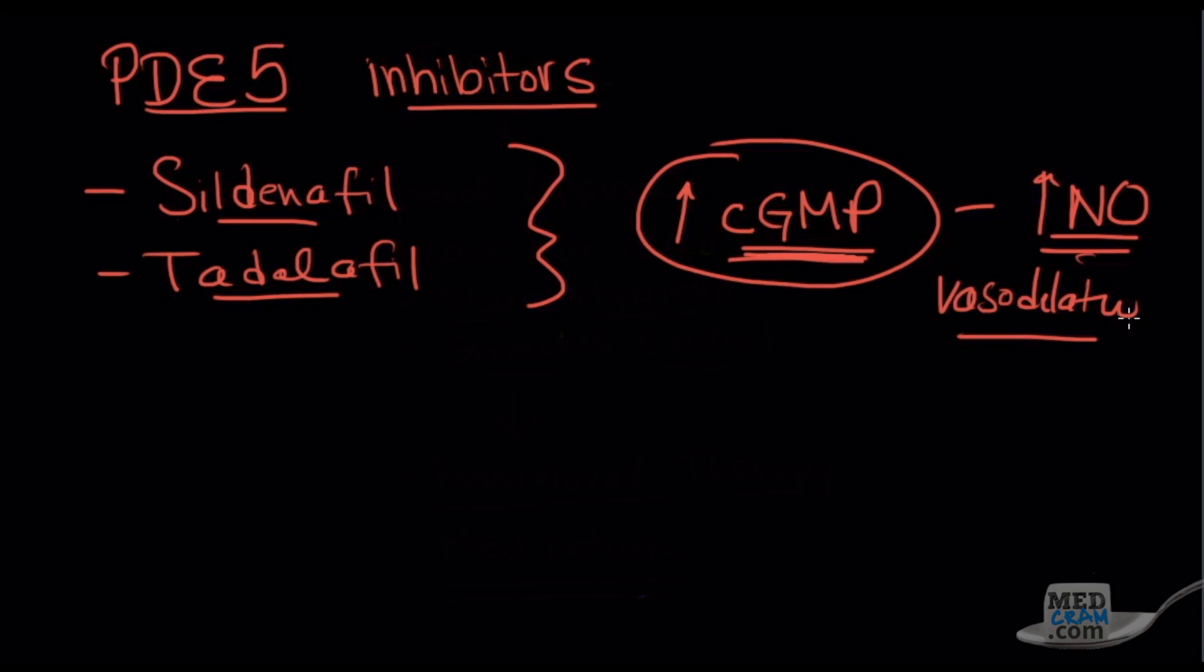So there's a couple of other things that also increase vasodilation, and that would be like an alpha blocker or nitrate. So you should not be on these medications at the same time. These PDE5 inhibitors cause vasodilation in the pulmonary vasculature by increasing nitric oxide. And they do it specifically by inhibiting the breakdown of cyclic GMP.